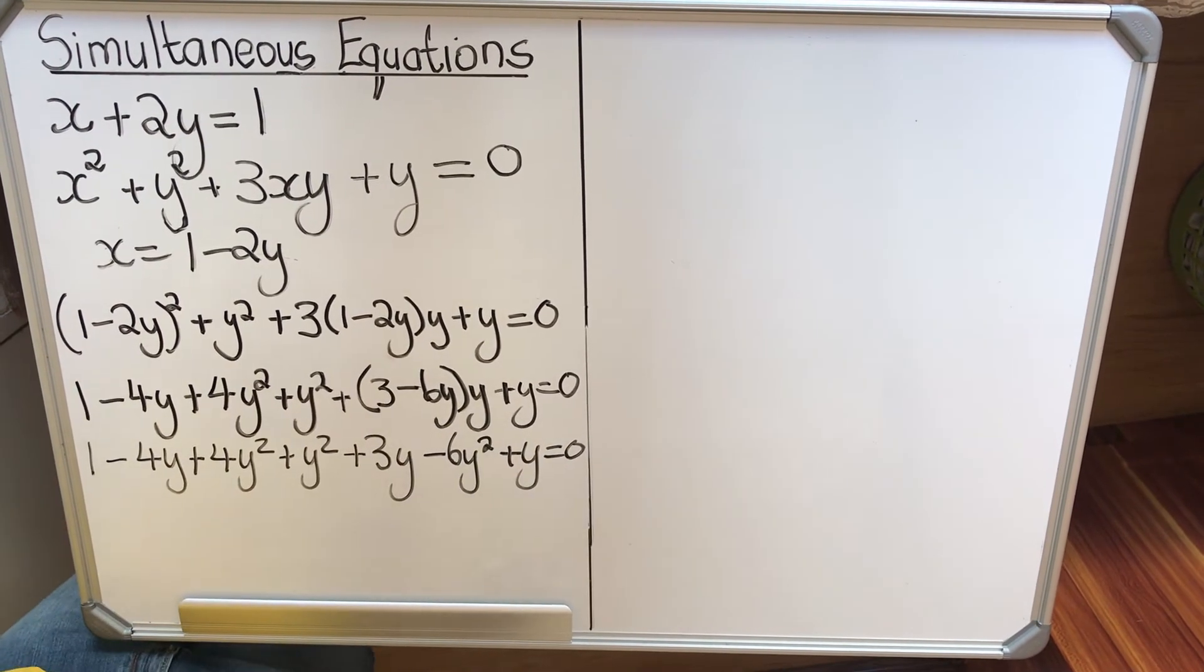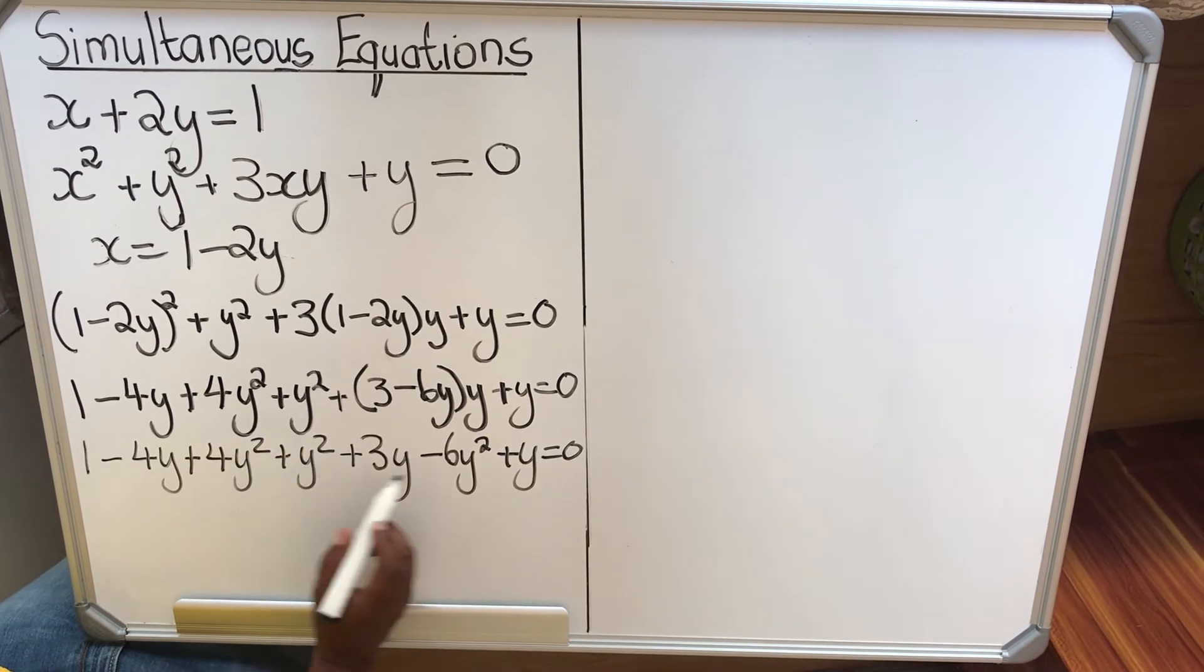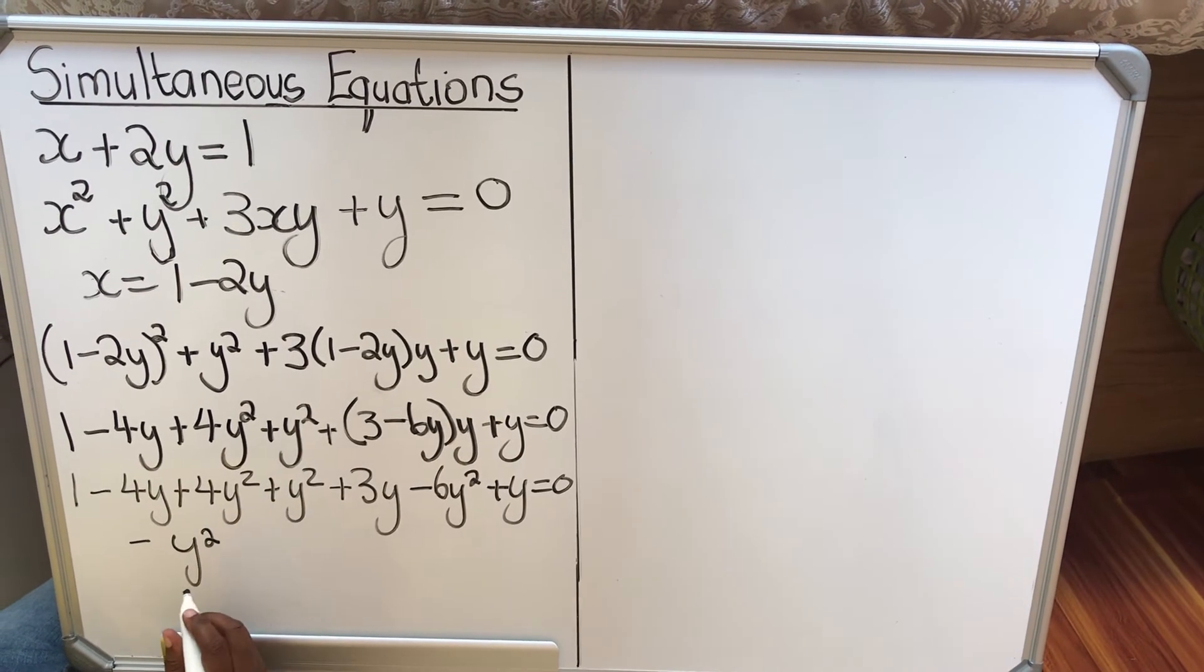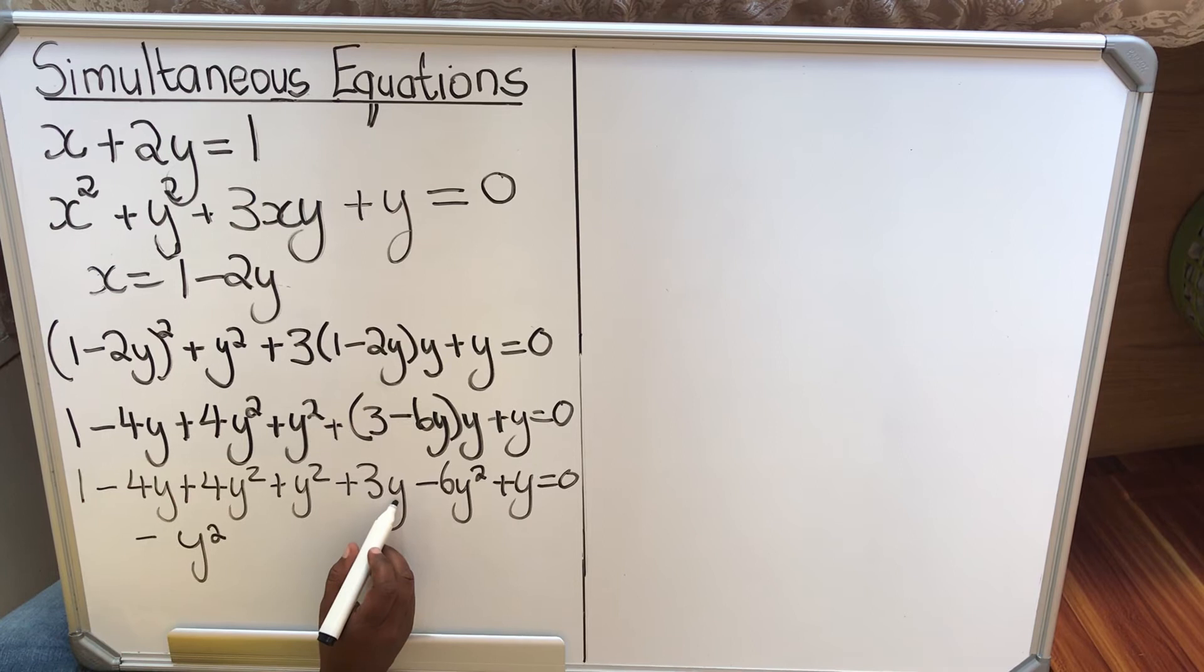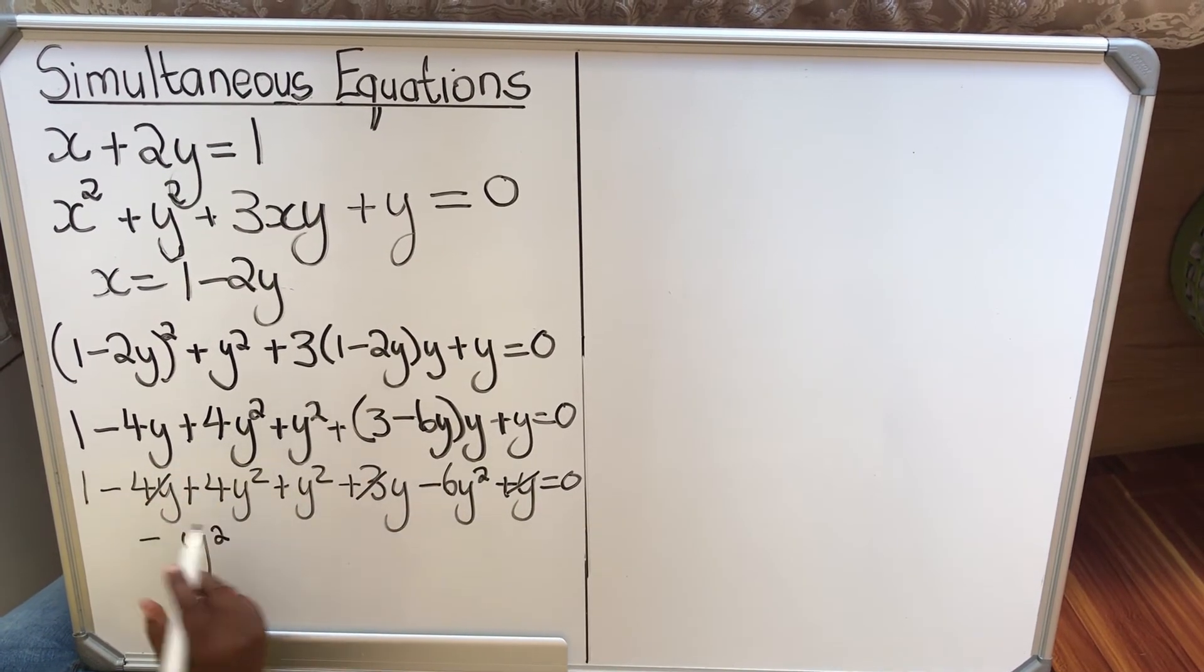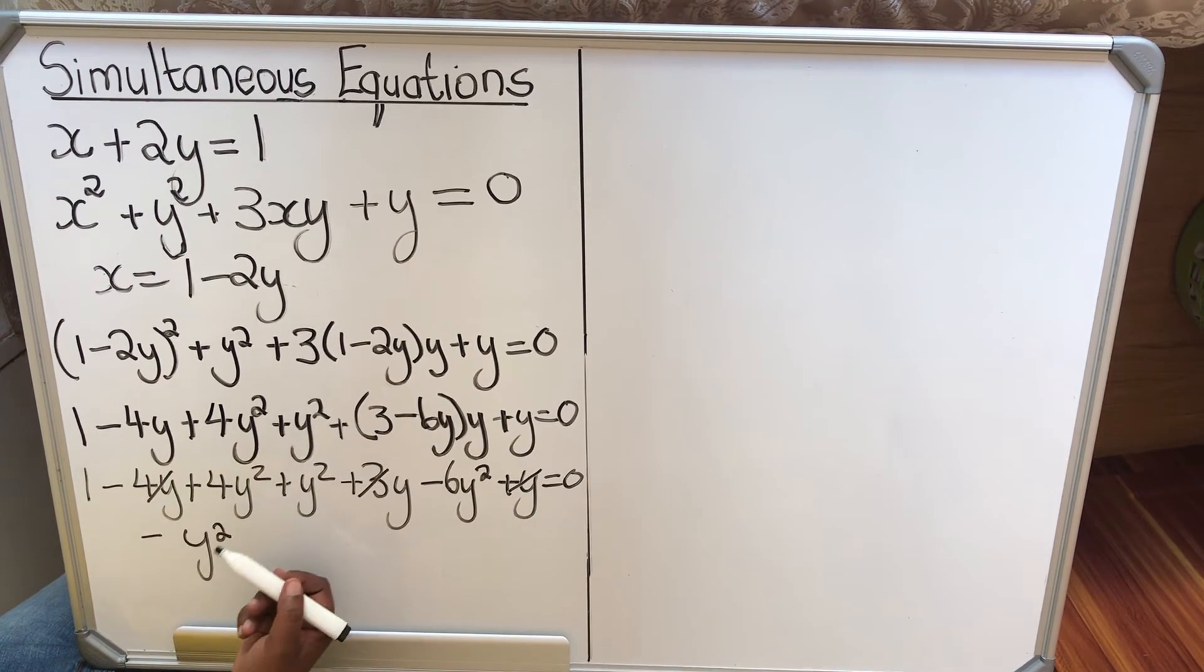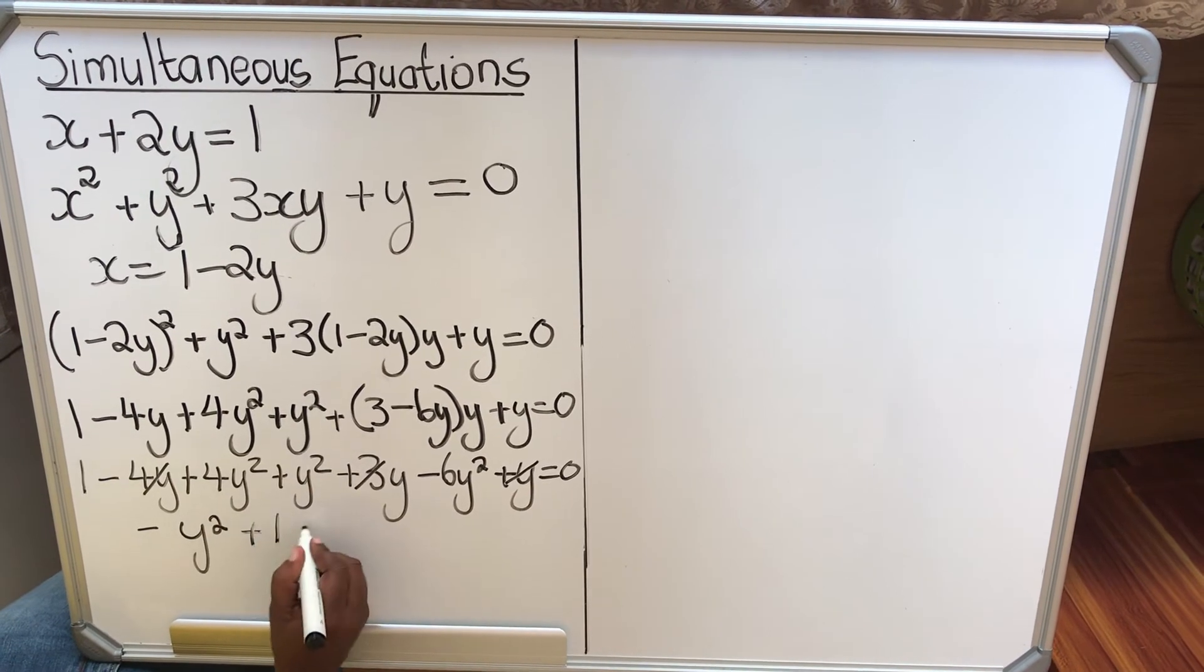Now we're going to collect like terms. 4y squared, y squared, and minus 6y squared, we get minus y squared. Then we get 2 y's: minus 4y, 3y, and a y. So these ones will cancel out. That and that is positive 4y, that's negative 4y, then cancel out. And then the term that we're left with is plus 1. This equals 0.